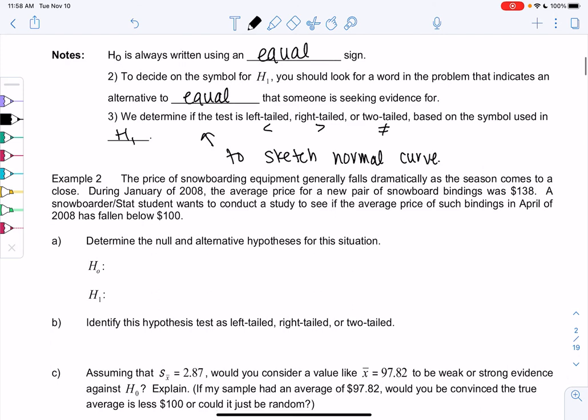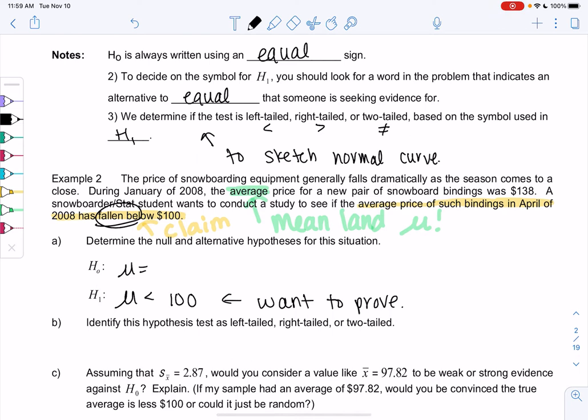Example two: The price of snowboarding equipment generally falls dramatically as the season comes to a close. During January of 2008, the average price - I see the word average, which means we're probably in mean land, which means no proportions, we're using mu. The average price for a new pair of snowboard bindings was $138. A snowboarder stat student wants to conduct a study to see if the average price of such bindings in April of 2008 has fallen below $100. That sounds like a hypothesis, that's a claim. What do we want to prove? We want to prove fallen below, so we want to prove mu is less than 100. I like to write H1 first, what we want to prove. Then H0, ignore everything else, it's not 138, it's just equal to that same number. If we can disprove that it equals 100, then we'll be able to prove that it's less than 100.